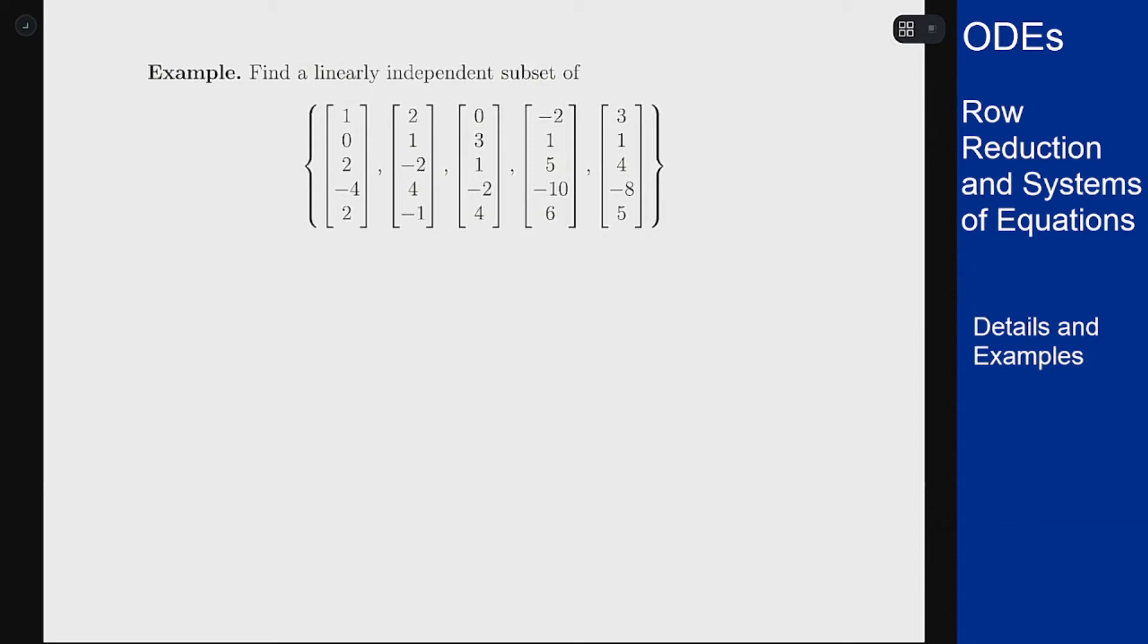In this example we want to find a linearly independent subset of a collection of five vectors. We have five vectors here and we want to find a subset of them that are linearly independent.